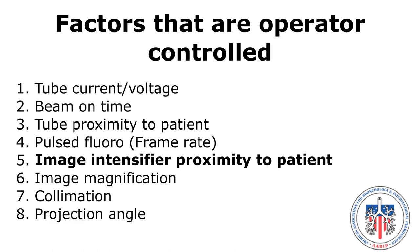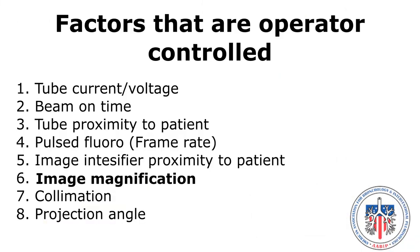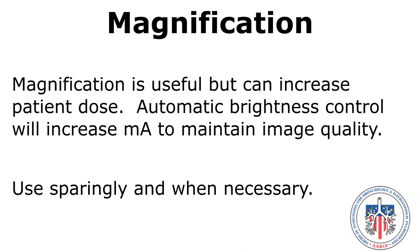Image intensifier proximity to the patient: the further away the image intensifier is from the patient, the more radiation noise and scatter occurs compared to when it is closer to the patient. Image magnification is useful but can increase patient dose. Automatic brightness control will increase milliamps to maintain image quality, so use magnification sparingly and only when necessary.